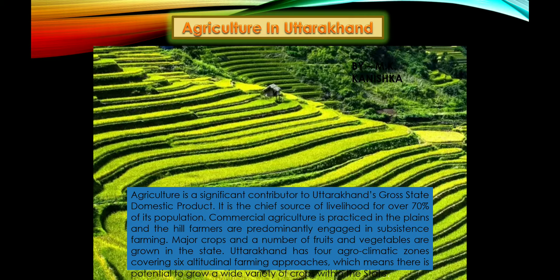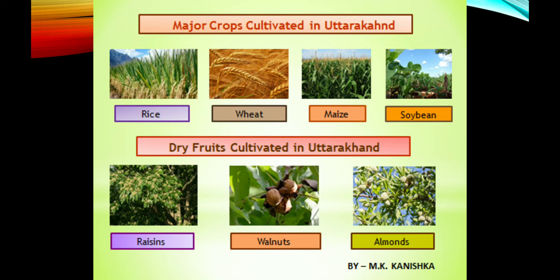Agriculture in Uttarakhand: Agriculture is a significant contributor to Uttarakhand's gross state domestic product and is the chief source of livelihood for over 70% of its population. Commercial agriculture is practiced in the plains, while hill farmers are predominantly engaged in subsistence farming. Uttarakhand has four agroclimatic zones covering six altitudinal farming approaches, offering potential to grow a wide variety of crops.